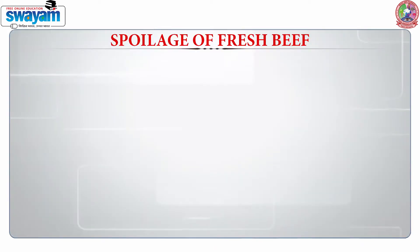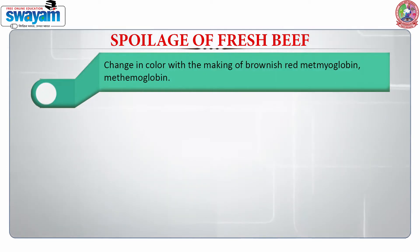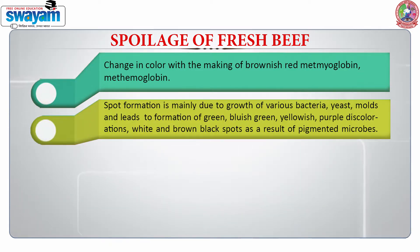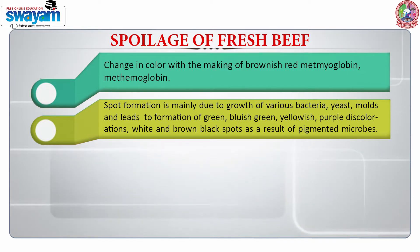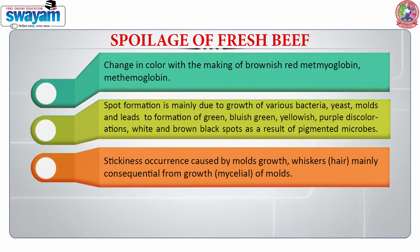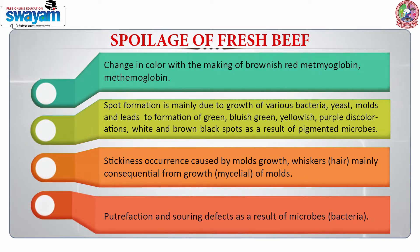When we talk about the fresh meat, we will also like to include the spoilage of beef. When the beef has spoiled, the first thing is a change in colour, and this change in colour is due to the production of brownish red metmyoglobin. We can also see spot formation which is due to the growth of a mixture of bacteria, yeast and moulds, and it leads to the formation of yellowish purple discolourations, and white and brown-black spots as a result of pigmented microbes. Stickiness occurs due to mould growth, and whiskers can be seen on the surface, which are basically due to the mycelial growth of mould species. Putrefaction and souring is usually the outcome of bacteria.